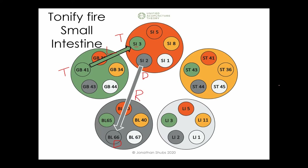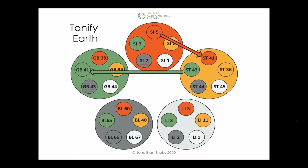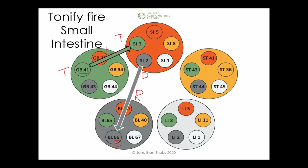The treatment is: tonification of Small Intestine 3 and Gallbladder 41 on the left side, and dispersion of Small Intestine 2 and Bladder 66 on the right side. By doing this, we help patients find a better balance in relationship to their emotional connections to other people and to themselves.